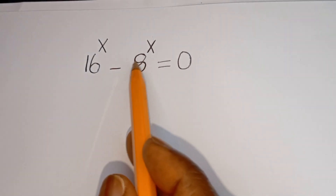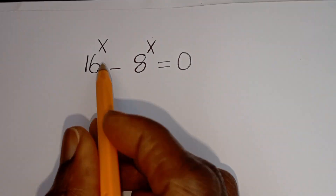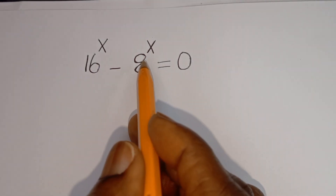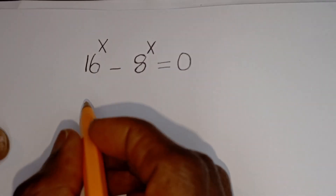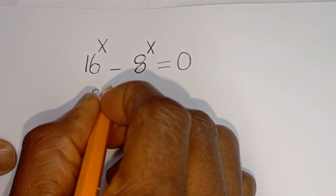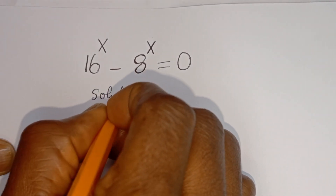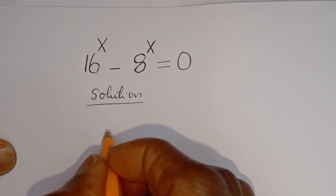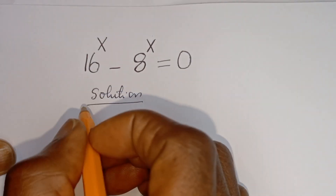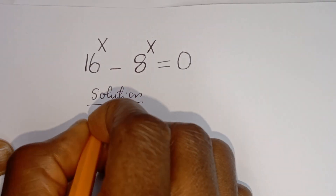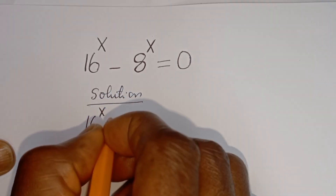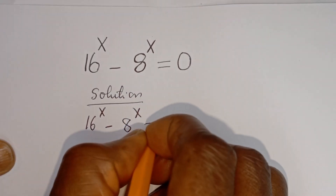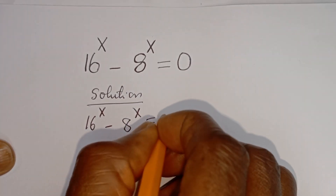Hello. How to solve for x in this equation: 16 to the power of x minus 8 to the power of x is equal to zero. Solution: here we have 16 to the power of x minus 8 to the power of x is equal to zero.